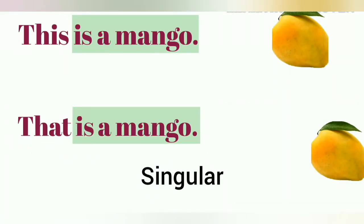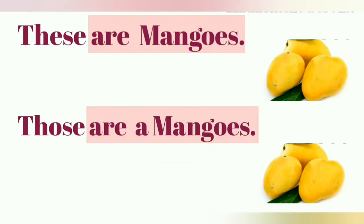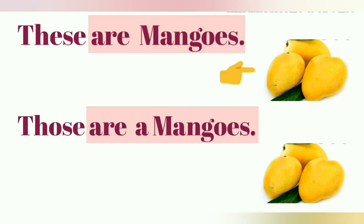This and that are singular. If something is nearby you use this; if something is distant, you use that. For plural, where there is more than one: these and those. For example: these are mangoes here; those are mangoes there.